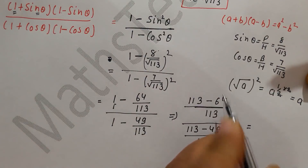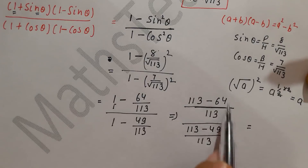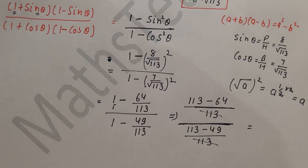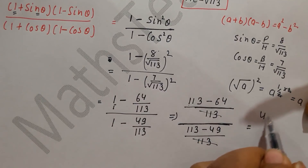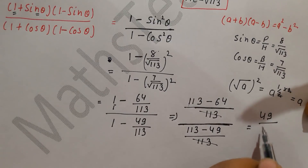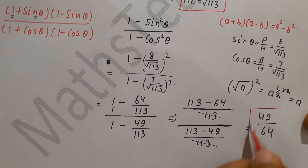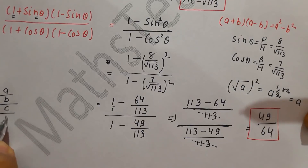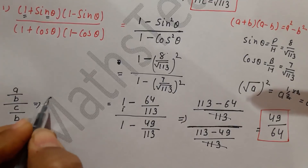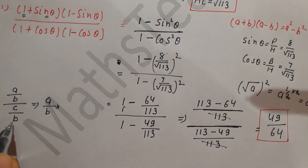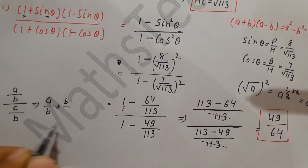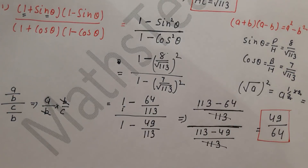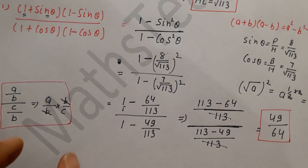Now we cancel: (49/113) divided by (64/113). Since both denominators are the same (113), they cancel. We get 49/64. This is our required answer. To understand the cancellation: a/b ÷ c/b = a/c. So 113 cancels and we get 49/64.